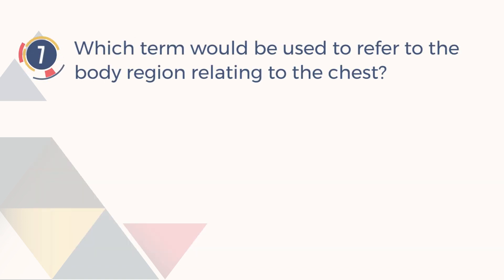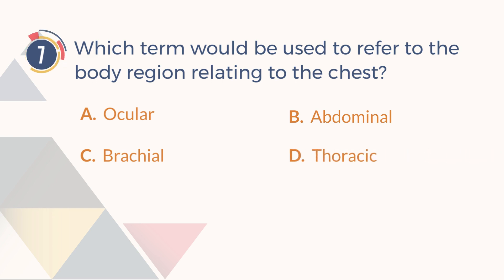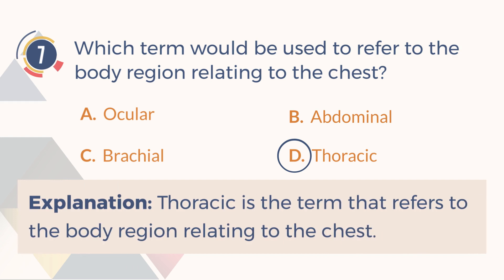Number 7. Which term would be used to refer to the body region relating to the chest? A. Ocular. B. Abdominal. C. Brachial. D. Thoracic. The answer is D. Thoracic. Explanation: Thoracic is the term that refers to the body region relating to the chest.